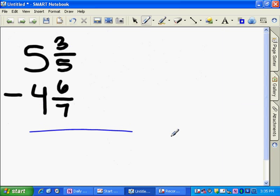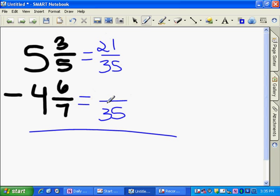And the last one I'm going to show you is 5 and 3 fifths minus 4 and 6 sevenths. We're going to go with a common denominator of 35 here, and since 5 times 7 is 35, I'm going to do 3 times 7, which is 21, and 7 times 5 is 35, so I'm going to do 6 times 5, which is 30.